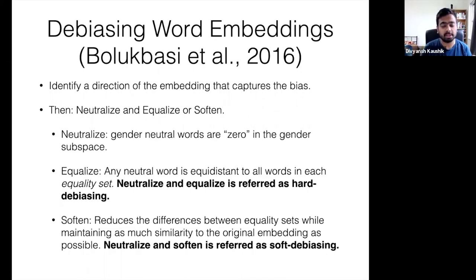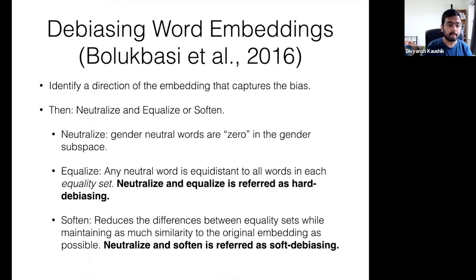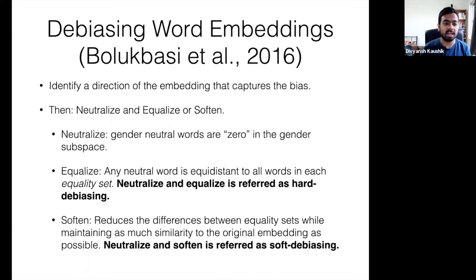In another work, they try to debias word embeddings by exploiting the geometry of these embeddings. They identify a direction — or more generally a subspace of the embedding — that captures gender bias. To identify the gender subspace, they took 10 gender pair difference vectors like he-she, male-female, man-woman, and computed principal components. They found that there is a single direction that explains the majority of variance in these vectors — the first eigenvalue is significantly larger than the rest.